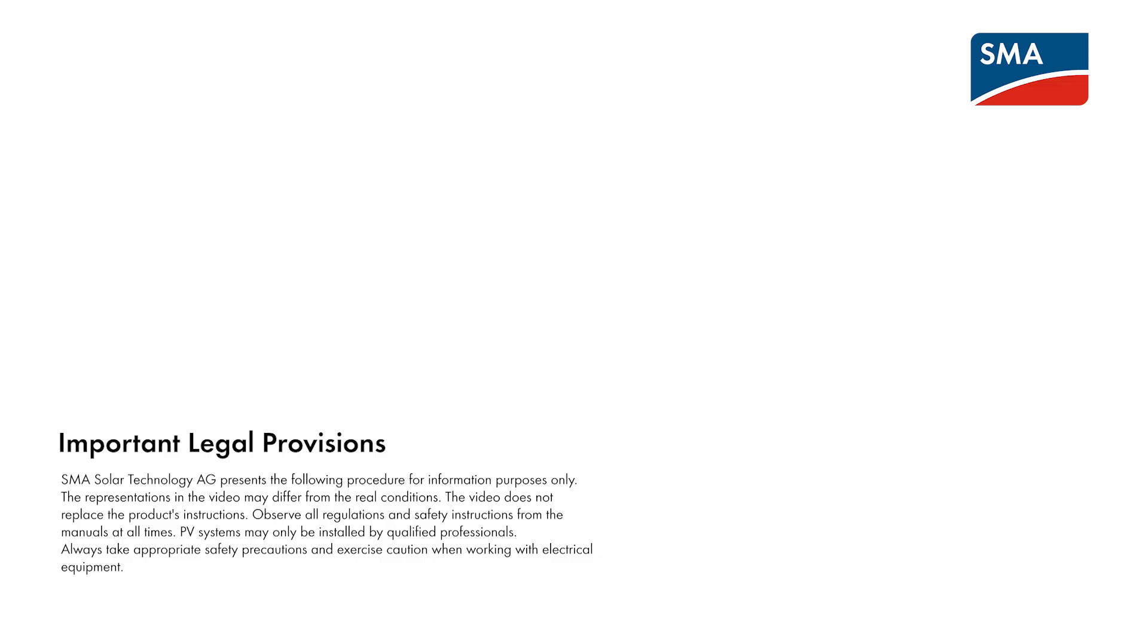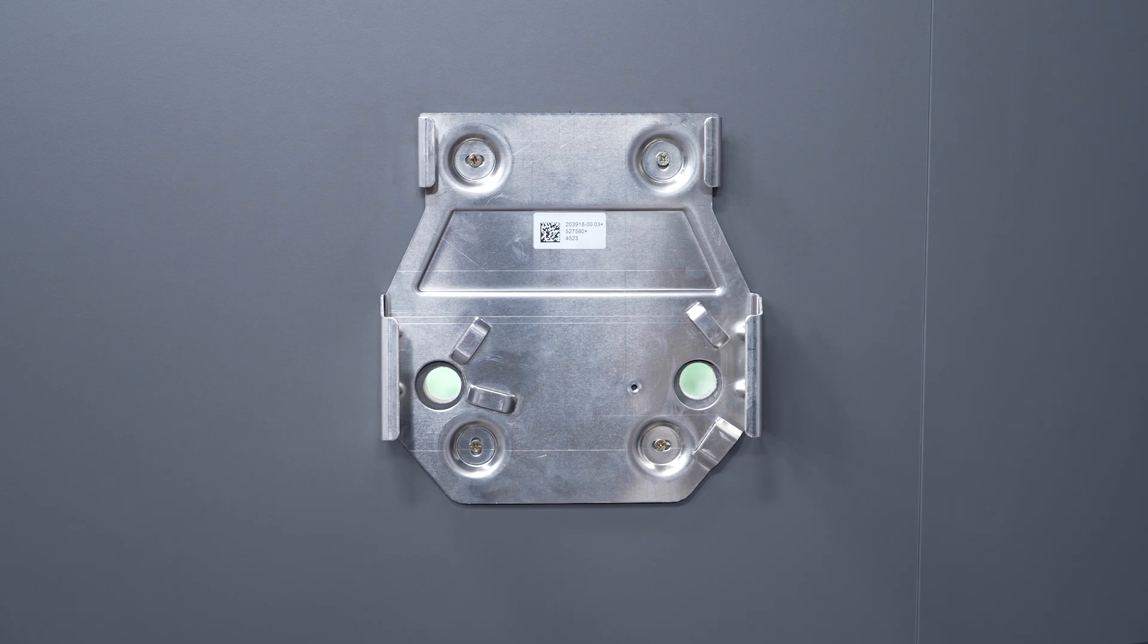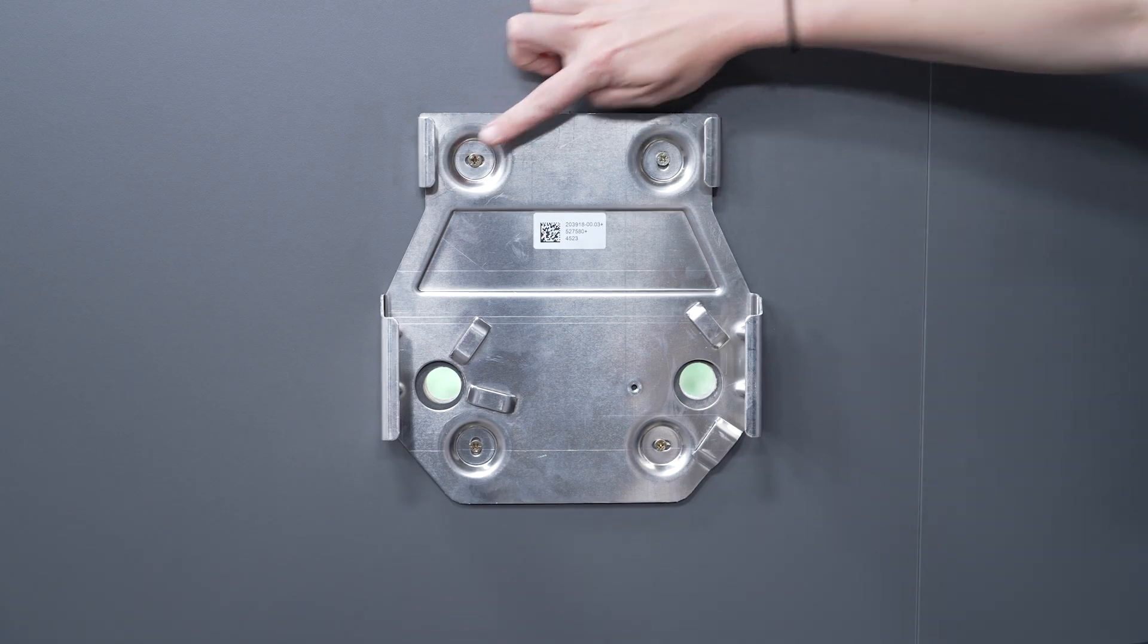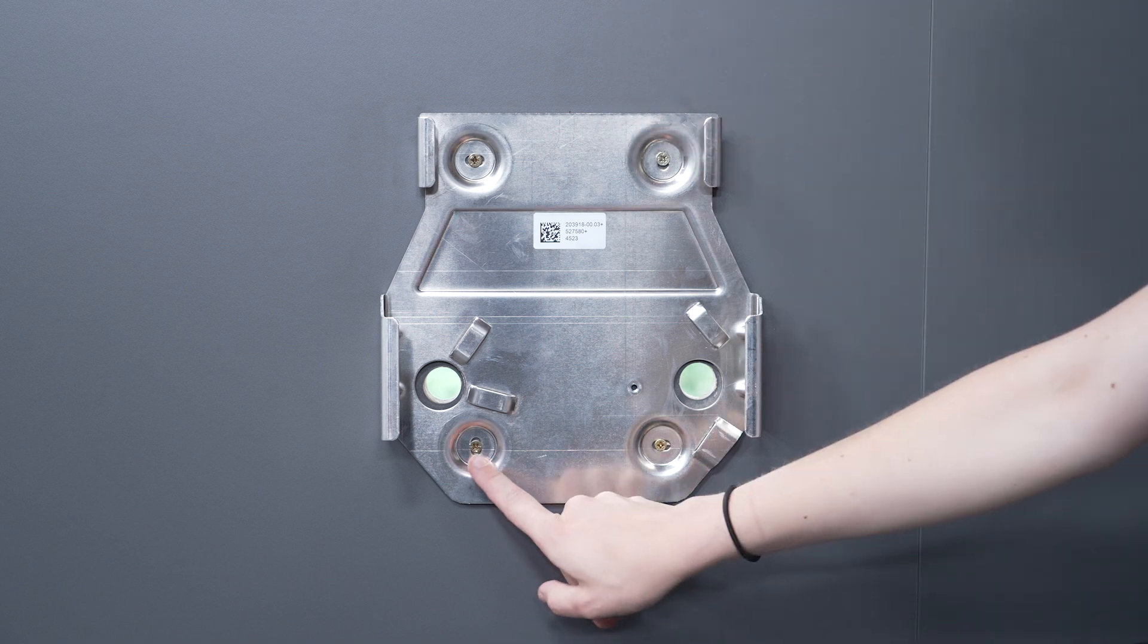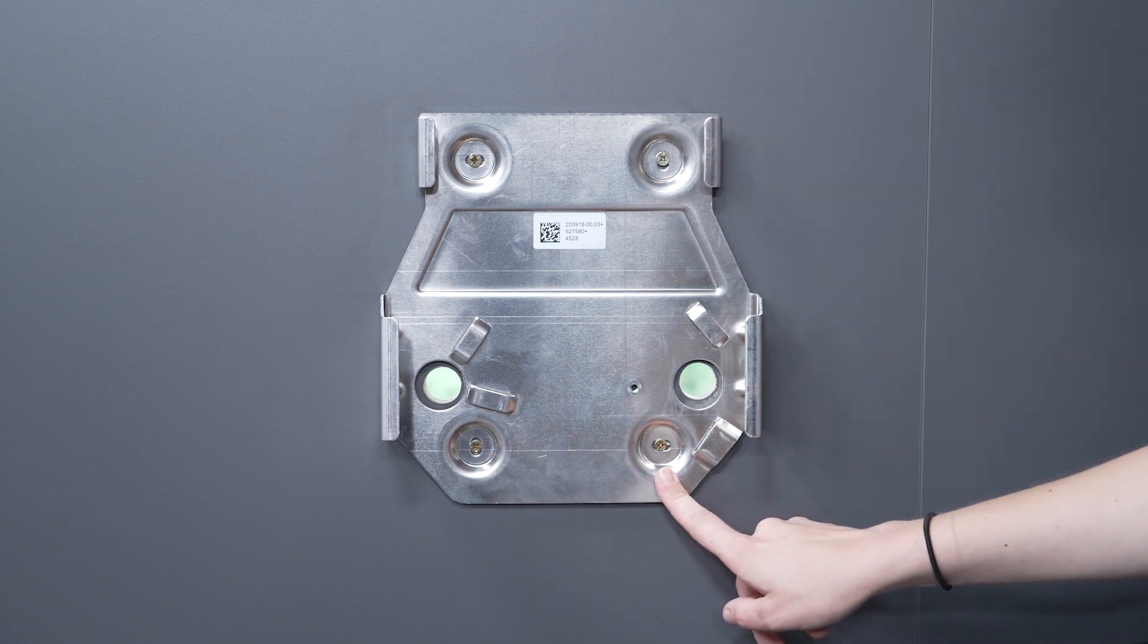For your own safety, please follow the instructions in the booklet with safety relevant information included in the scope of delivery. First, remove the wall bracket from the box and attach it to the wall using four suitable screws. I've already completed the step due to time constraints.